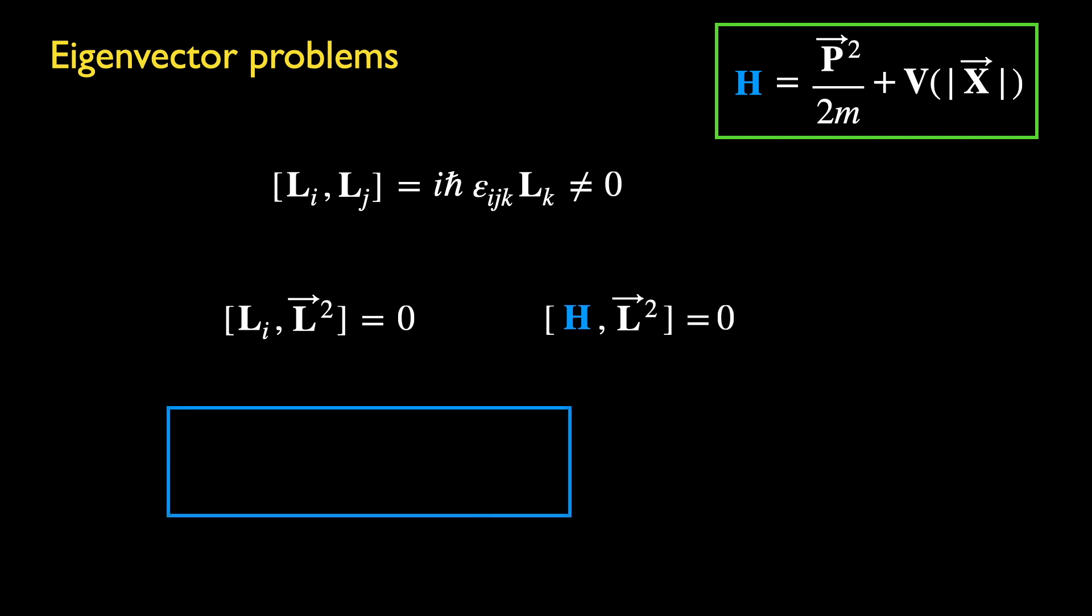Thus, we have three operators which mutually commute with each other, and can therefore share the same eigenstates. The third component of L is chosen purely by convention. It corresponds to an axis with special significance in some physical problems, as we shall see.